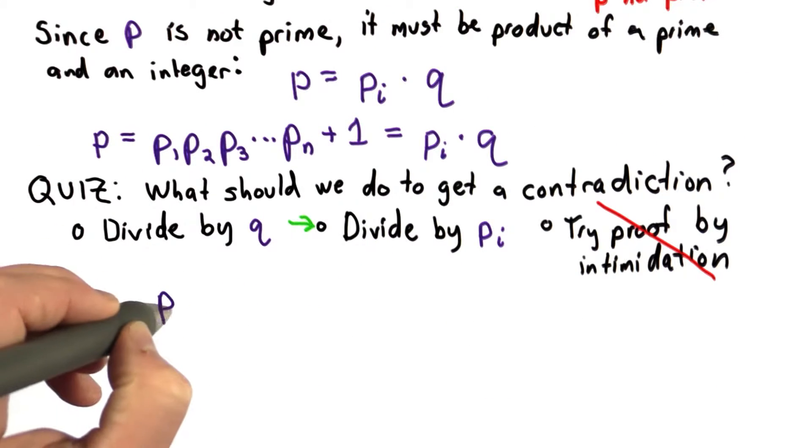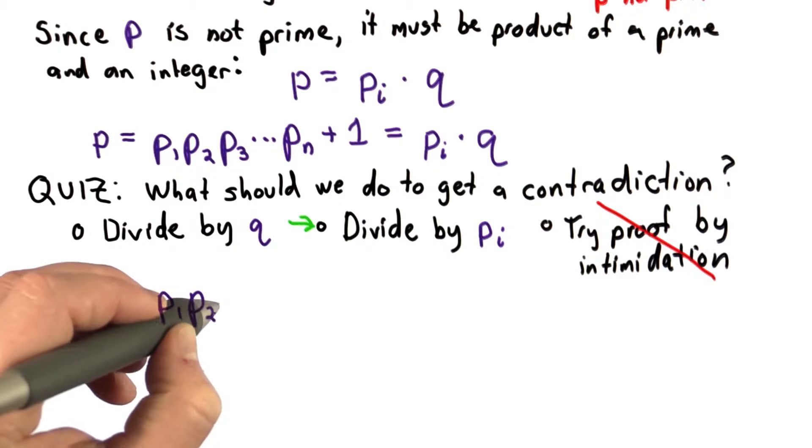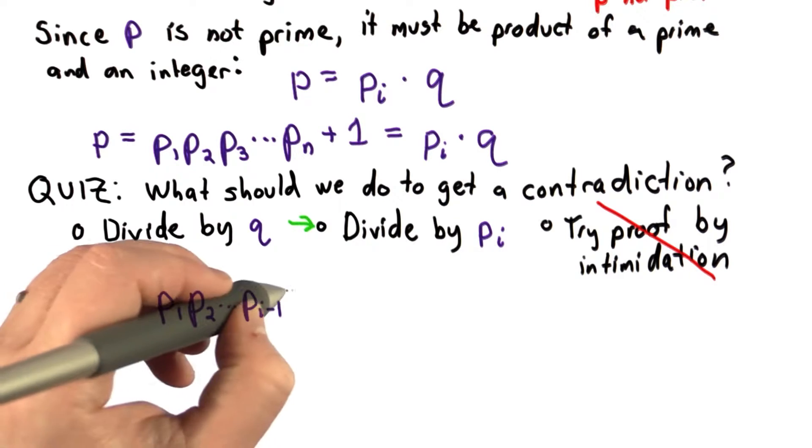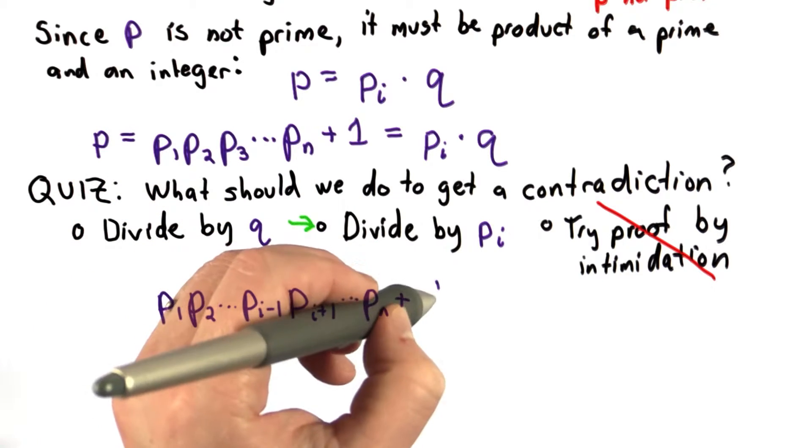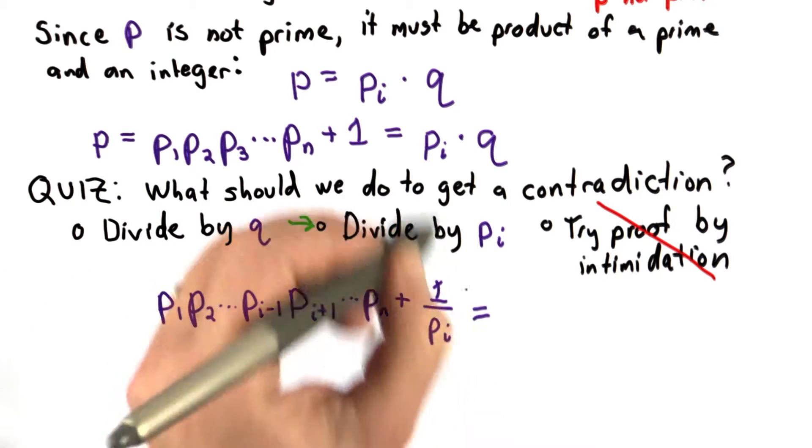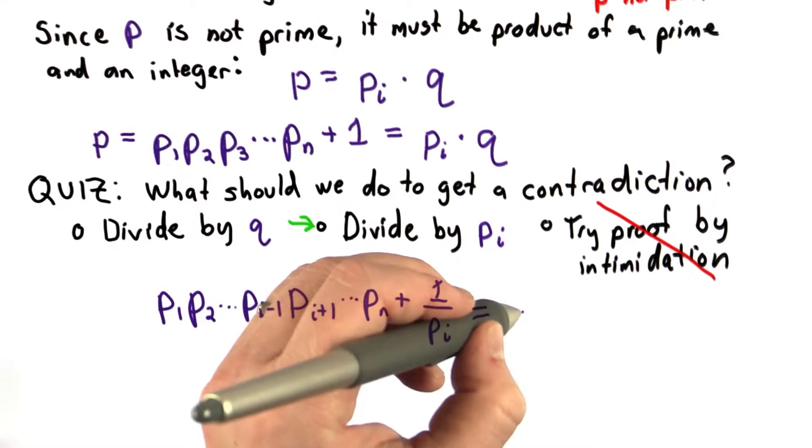Well, the left side, we have this product of primes, so we're going to still have this product of primes now removing P_i from the product, plus the 1, which is now divided by P_i, and we divided P_i out of P_i times Q, so we have Q here.